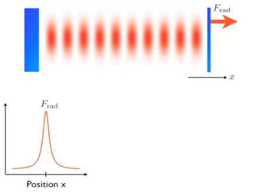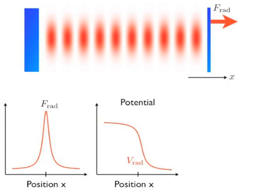The light exerts a radiation pressure force on the mirror, which is proportional to the light intensity. Thus, the force depends on the position of the mirror. Under certain conditions, this force can be expressed as the derivative of a conservative potential.